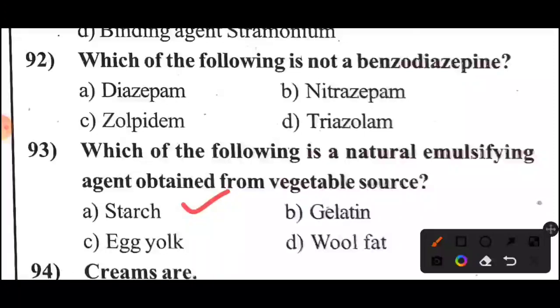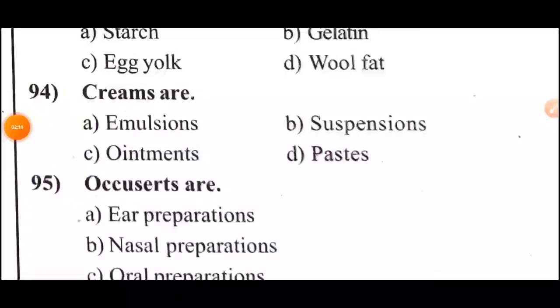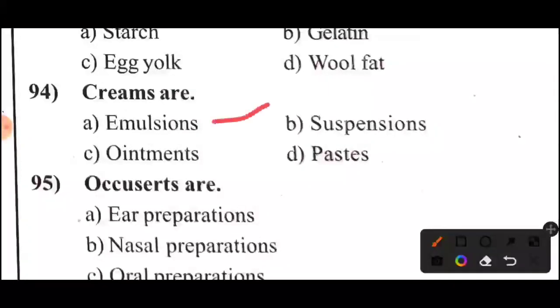Question 93: Which of the following is a natural emulsifying agent obtained from a vegetable source? Option A: Starch. Question 94: Creams are — Option E: Emulsions.